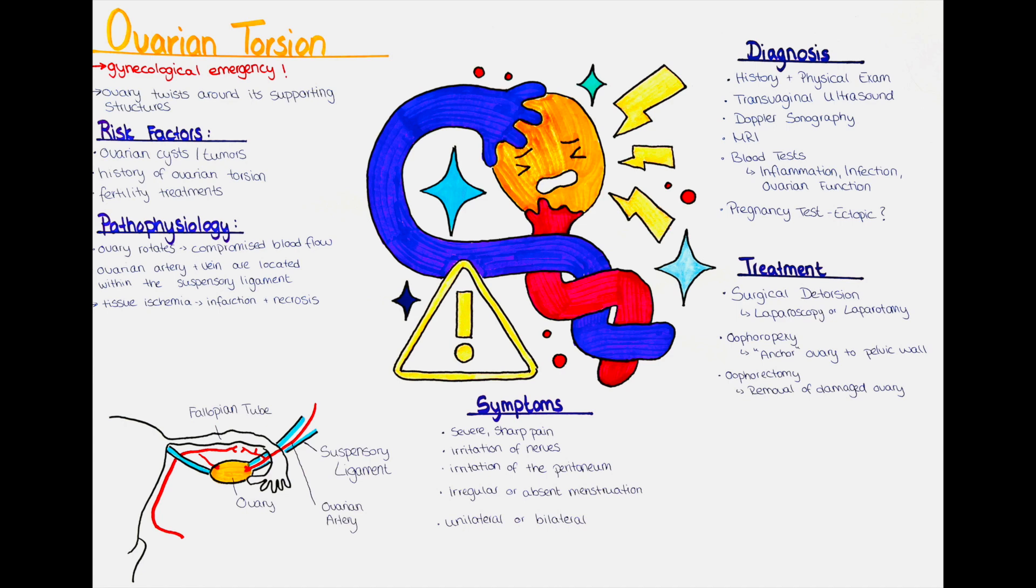Whenever possible, the goal is to preserve the affected ovary and its function. If the ovary appears viable and healthy after detorsion, no further action may be necessary beyond close monitoring and follow-up.